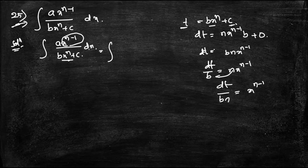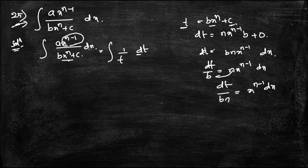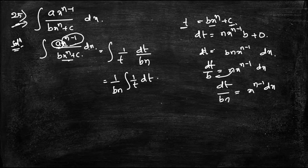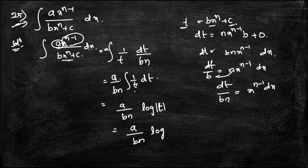This equals (a/bn)·log t. Substituting back t = b·x^n + c, the answer is (a/bn)·log(b·x^n + c) + C. Now moving to the 26th question.